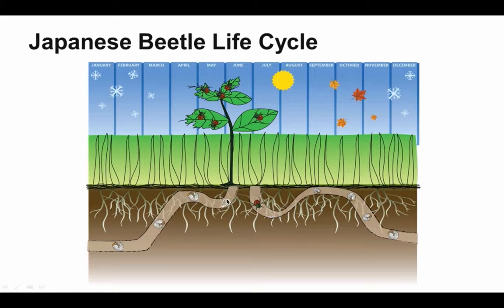Eventually they're going to change forms into a Japanese beetle. If you've ever heard the term June bug, that's what we're talking about. Then they'll come up out of the ground and maybe cause some damage to some plant material that's above ground. Eventually, what they're going to do is they're going to come back down and they're going to start to lay eggs so that it can continue this life cycle into next year.